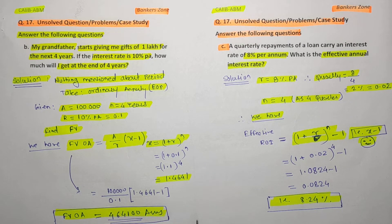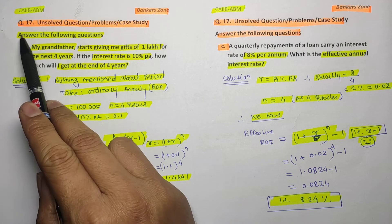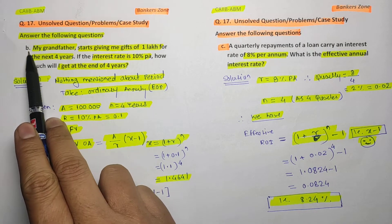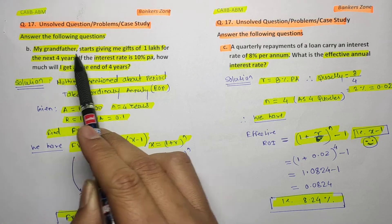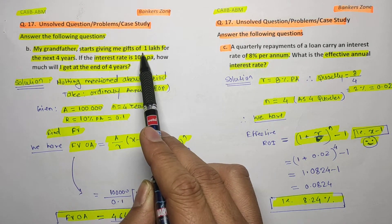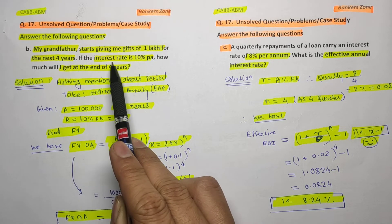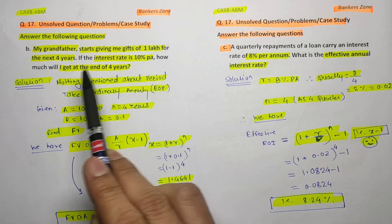Hello friends, we will study the remaining unsolved numericals from the Macmillan book on the time value of money. Question number 17B: my grandfather starts giving me 1 lakh rupees for the next four years, and if the interest rate is 10 percent per annum, how much amount will I get at the end of four years?